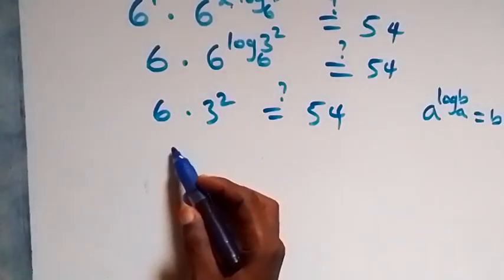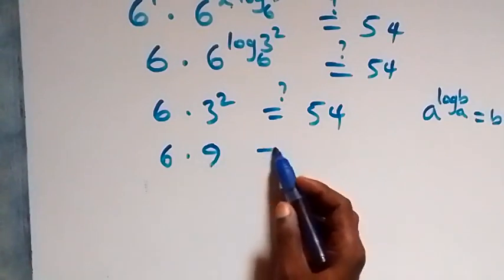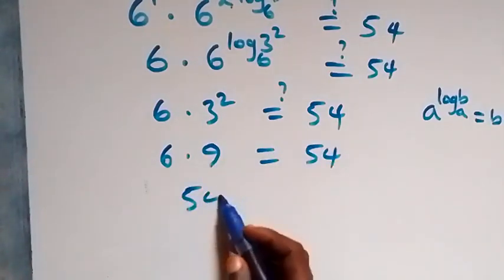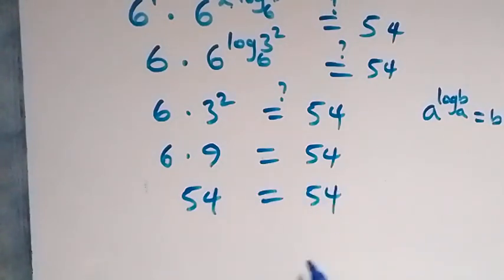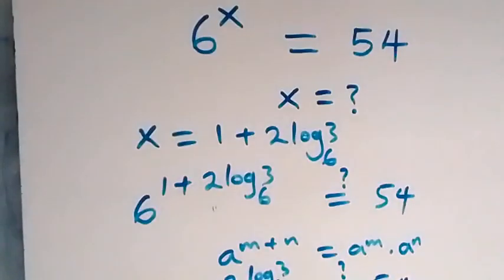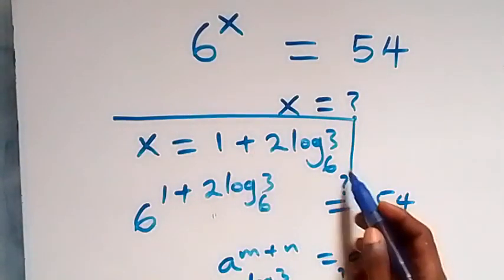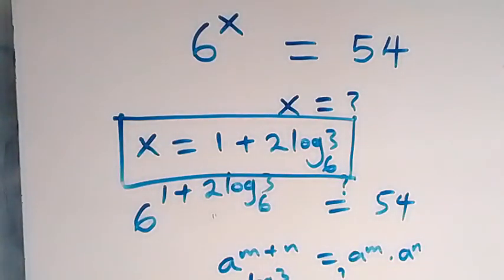3 squared is 3 times 3, which is 9. So we have 6 times 9 equals 54. Of course, 6 times 9 is 54, which equals 54. The left-hand side equals the right-hand side, confirming that x equals 1 plus 2 log 3 to base 6 satisfies the given problem.